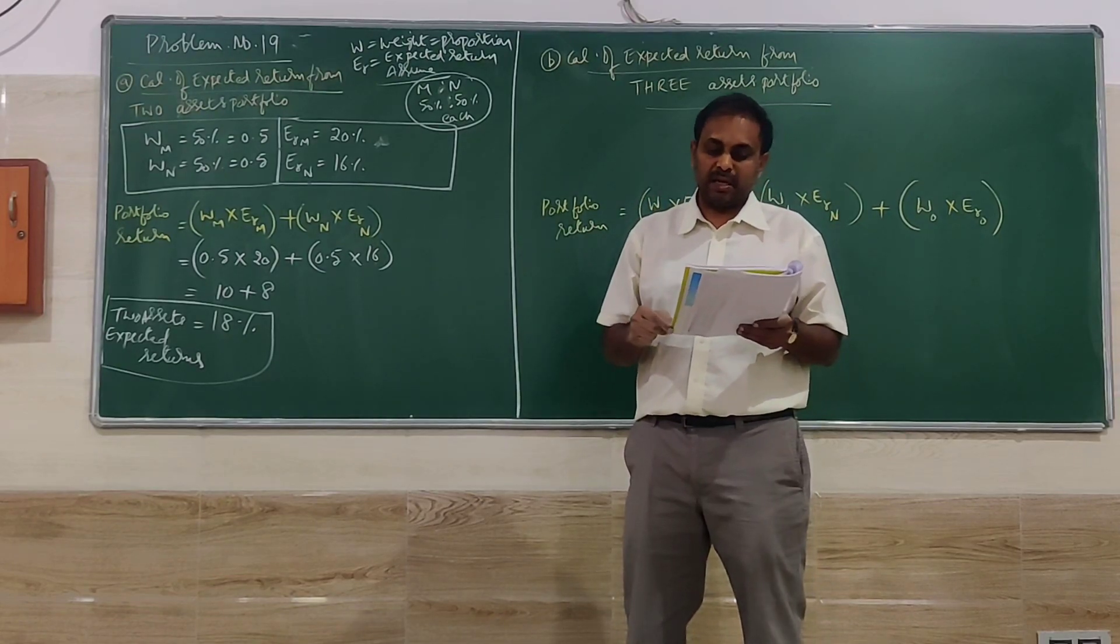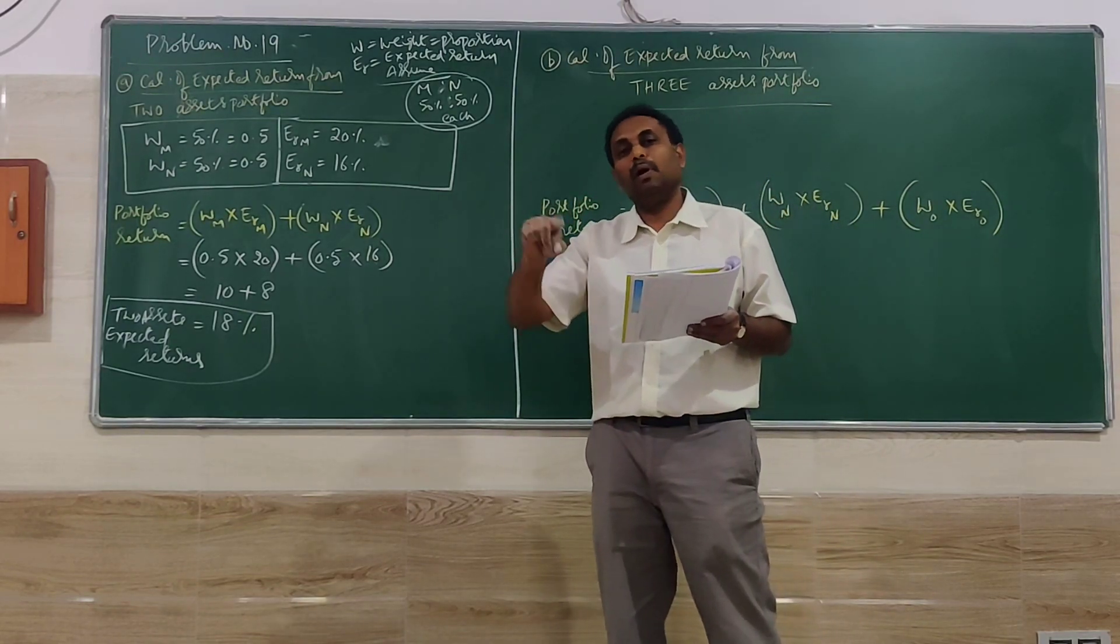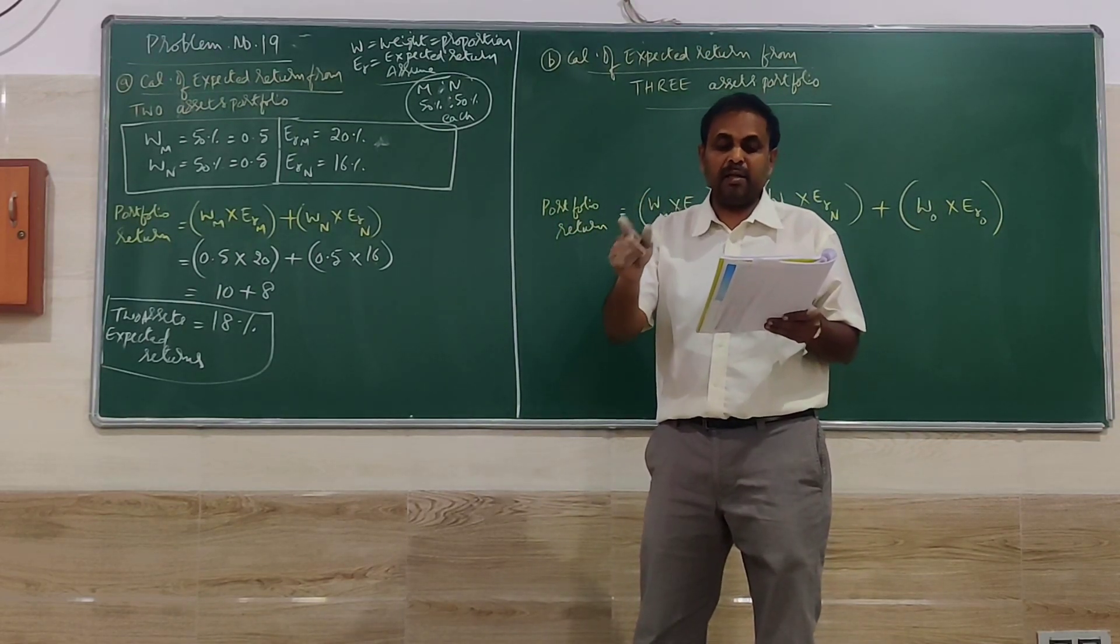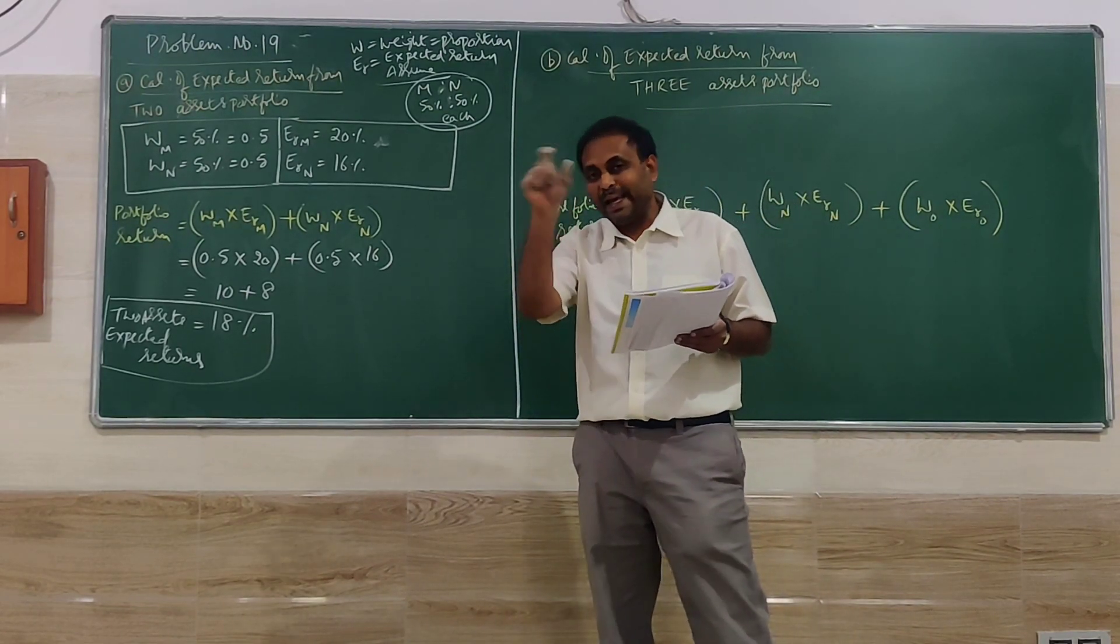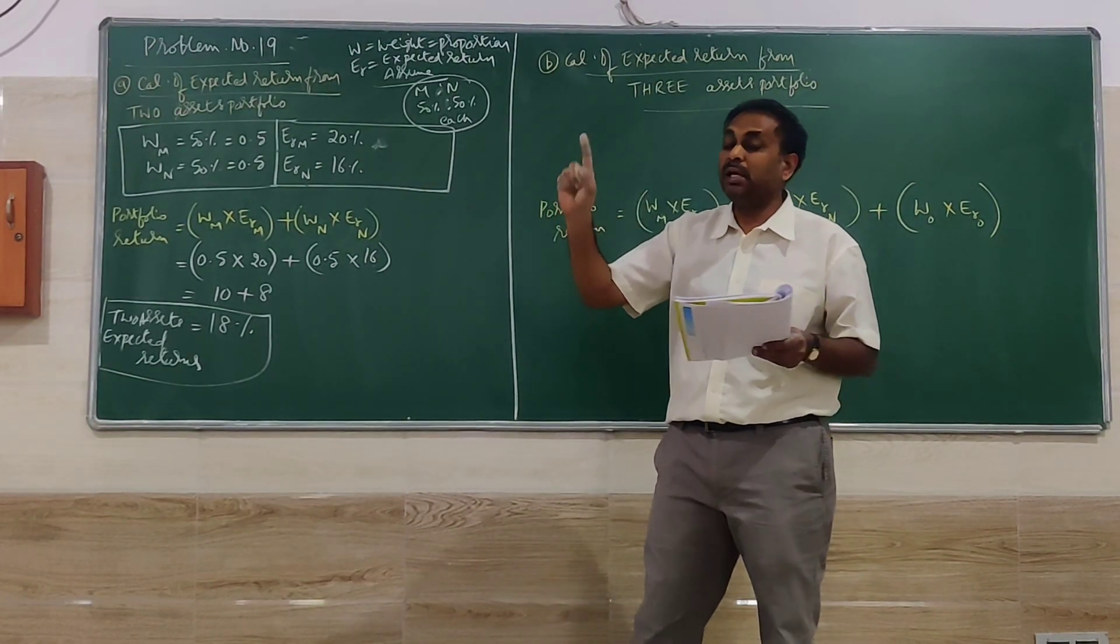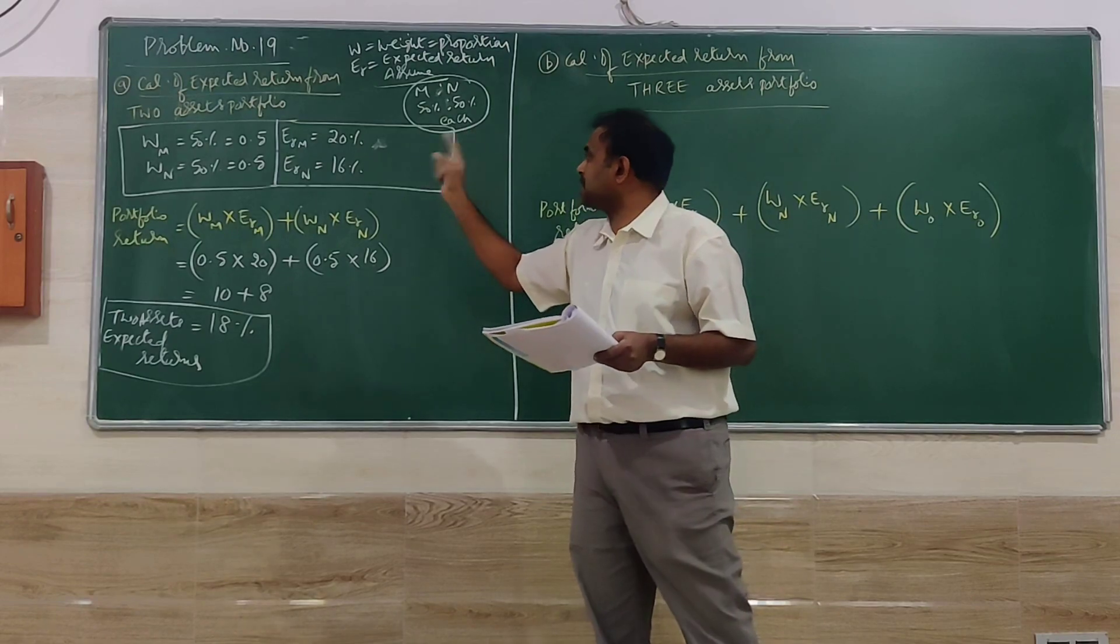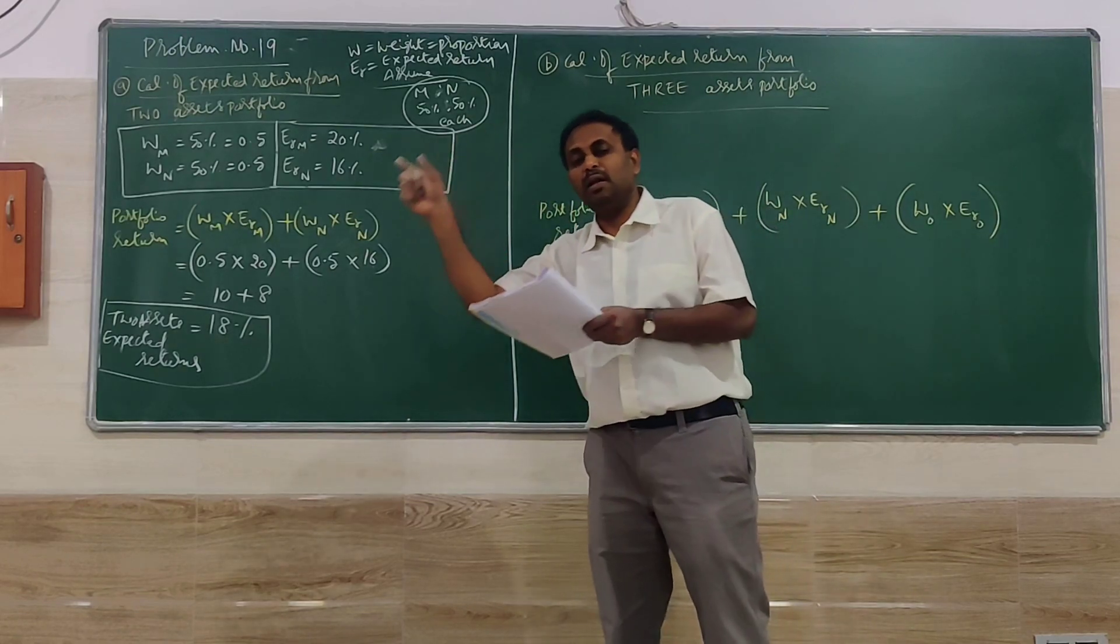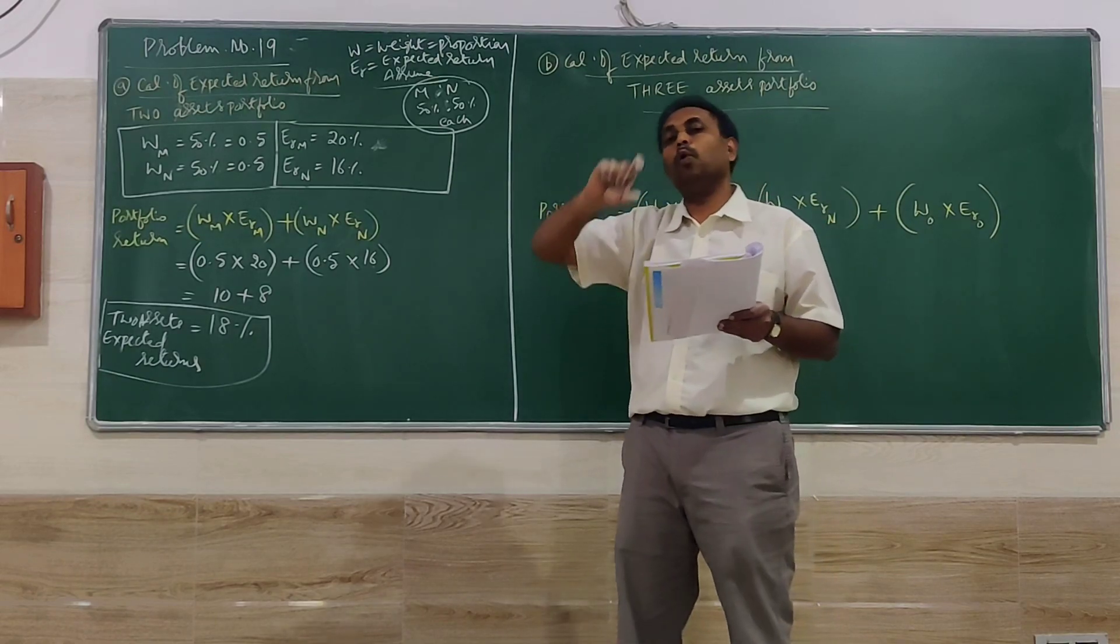The O company script is also included in the portfolio by partly selling the investment in N company. So the investor will sell N company investment to some extent and invest into O. That means M company will remain the same. The weight in M company remains the same. Only N company will get changed. Some portion of N company investment is invested in O company, so N company weight will come down and O company is created.